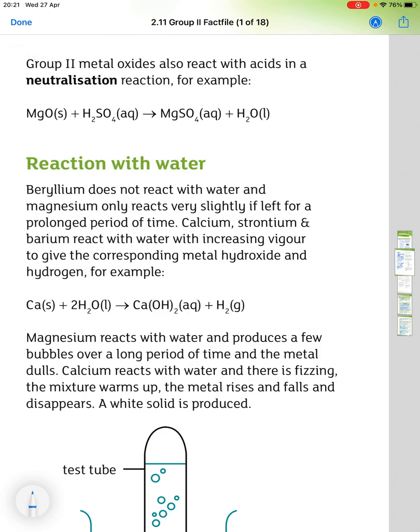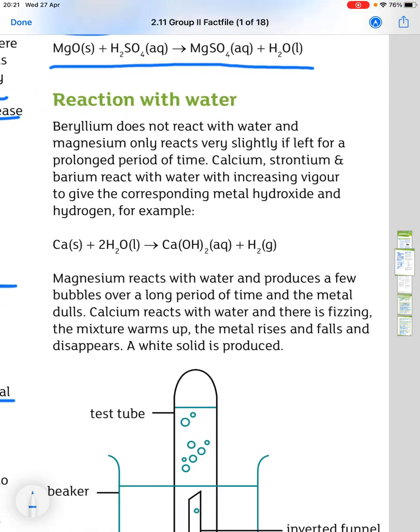And Group 2 metal oxides also react with acids in neutralisation. So, for example, magnesium oxide here is reacting with sulfuric acid to give magnesium sulfate and water.